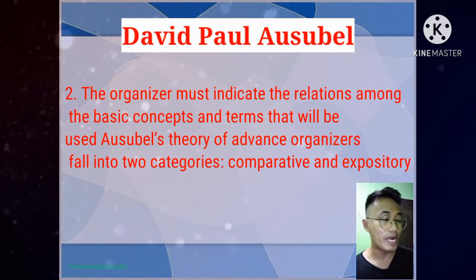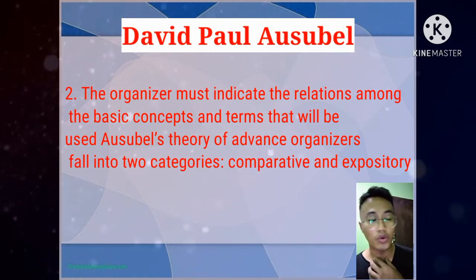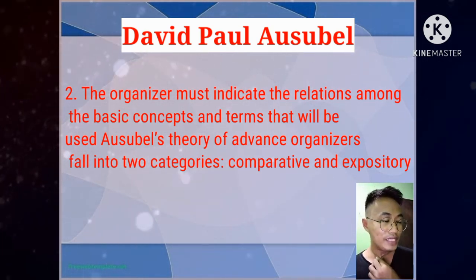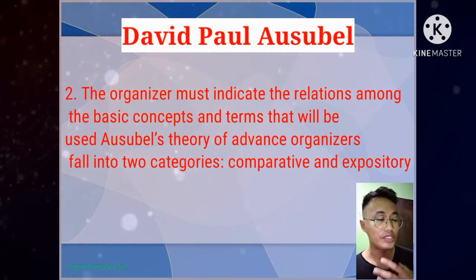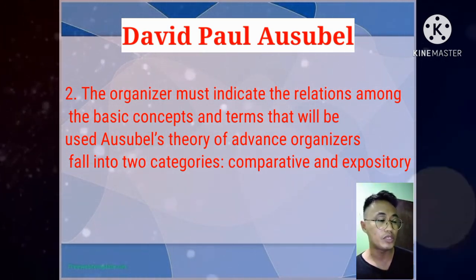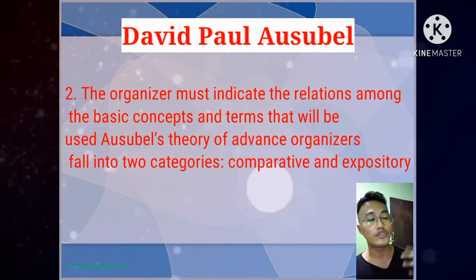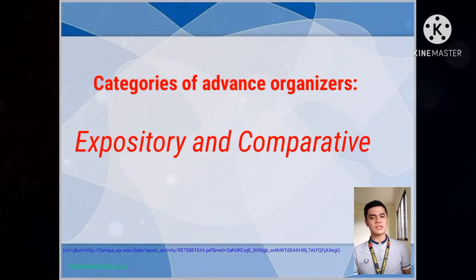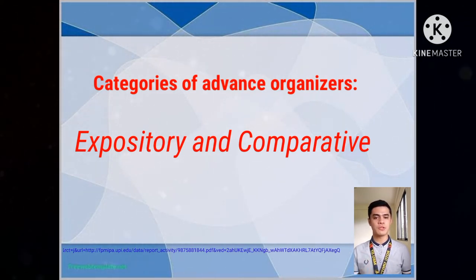For Ausubel, knowledge is comparative and expository. Comparative means the learner must be able to understand and integrate the knowledge gained from the lesson. Expository means there must be integration of knowledge from the classroom to society. The categories of advanced organizers are the expository and comparative organizers.